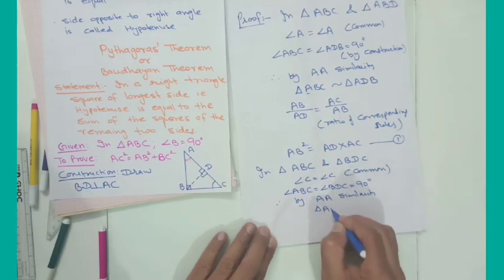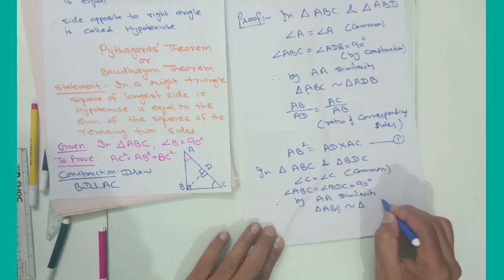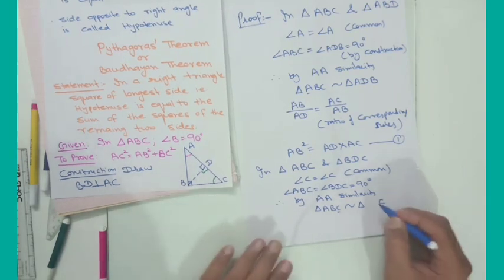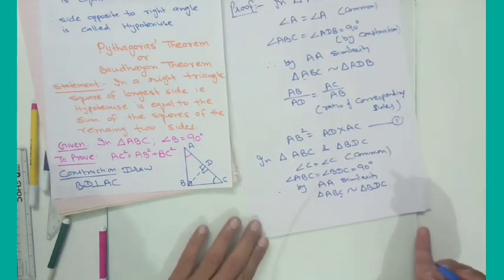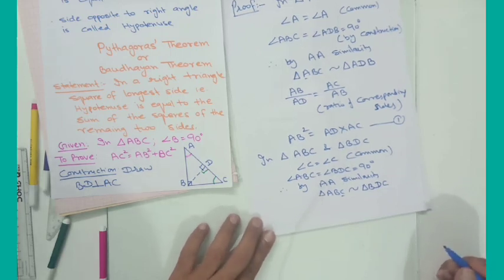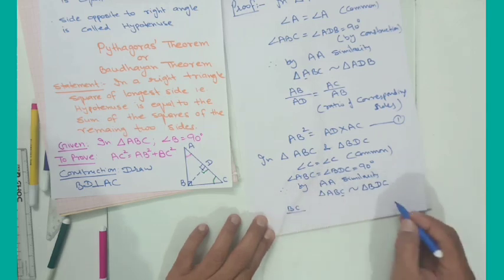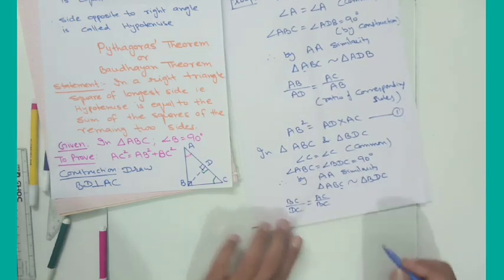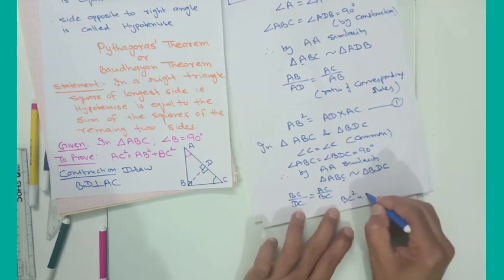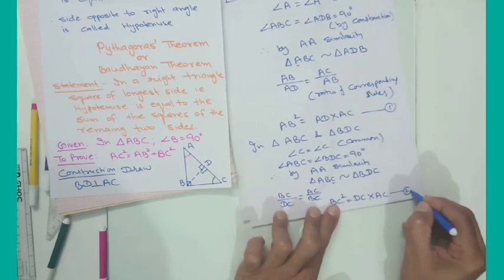Triangle ABC is similar to triangle BDC — with C corresponding to C, and B corresponding to D. Taking the ratio of corresponding sides, we get BC/DC = AC/BC, which gives BC² = DC × AC. Let this be equation 2.